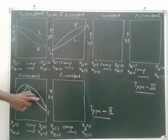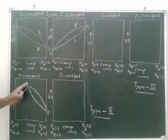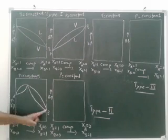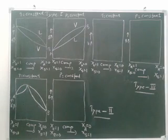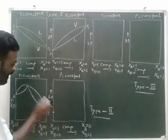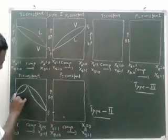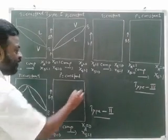This is the second type — Type 2 — in which one composition of the solution has a very high total vapor pressure, higher than both pure components. Therefore, A with high vapor pressure has a low boiling point, the mixture composition with very high vapor pressure has a very low boiling point, and B with low vapor pressure has a very high boiling point.